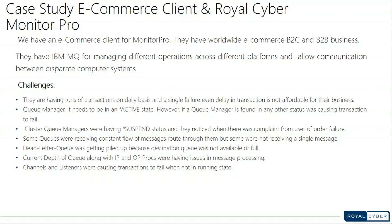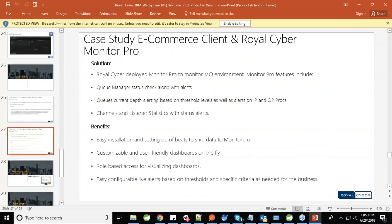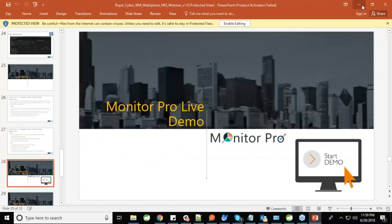The solution we provided was Monitor Pro, which monitors the whole system metrics of MQ — including queue manager status, queues, channels, and listener status along with statistics and alerts. The benefits include a very easy installation process — a Beats agent ships your MQ data to Monitor Pro — and a very user-friendly, customizable UI. Within a fraction of seconds your use case will be ready. We also provide role-based access control, so you can give admin or view-only access to particular users. Threshold-based alerting is a key feature and will be a boon for your company.